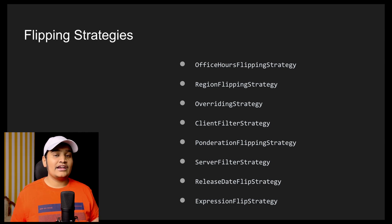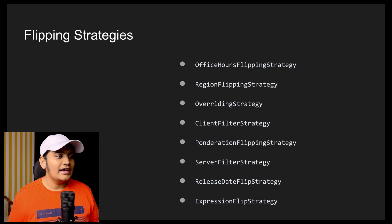The next is the Region flipping strategy. In this strategy you define a list of regions, and for requests coming from or deployments done in those particular regions, that feature will be enabled. For example, if you are enabling a feature for the Europe region, you define that this feature is for Europe and related regions. For every request it will check if the region matches — if not, the feature will be disabled.